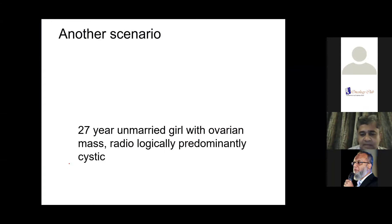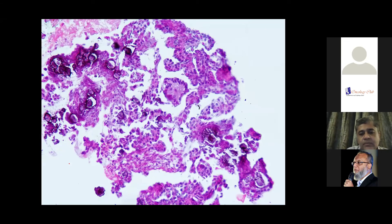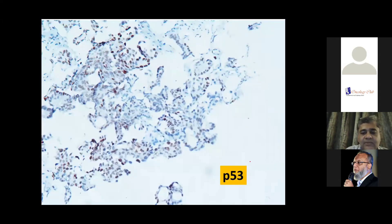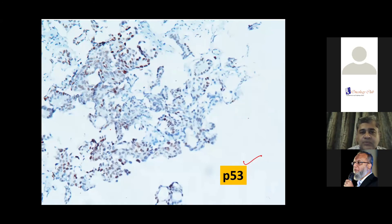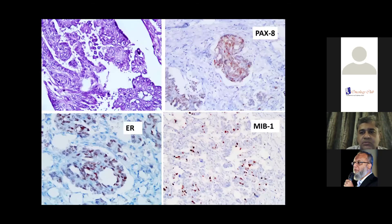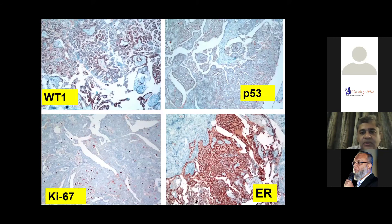Coming to another scenario: a 27-year-old unmarried girl with an ovarian mass that is predominantly cystic on radiology. A biopsy from the omentum of the same patient shows psammomatous calcification and a papillary tumor. Looking at P53 staining — for both low-grade and high-grade, we use P53. The P53 staining is wild-type — not diffuse and strong in low-grade — whereas in high-grade serous cancer it is diffuse and strong. P53 is of utmost importance in distinguishing high-grade from low-grade serous cancer. In this low-grade serous carcinoma, PAX8 is positive as a Müllerian marker, MIB1 is low, and ER is strongly positive. Wild-type staining for P53 — not very strong, not diffuse in the tumor cells.